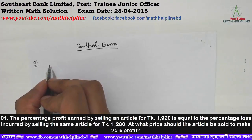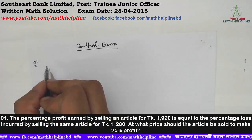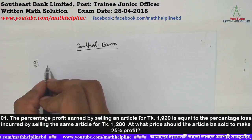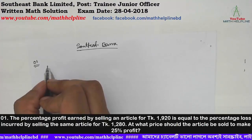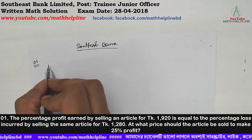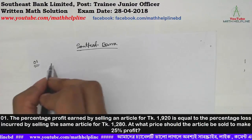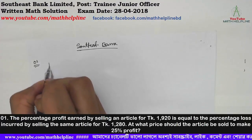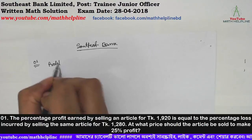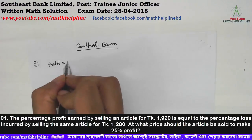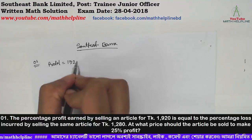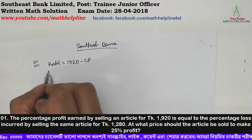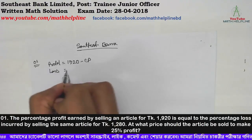Here it is said that selling at 1920 taka gives a certain profit percentage, and selling at 1280 taka gives the same loss percentage. We need to find at what price to sell for that profit. So here, profit equals selling price 1920 minus cost price.